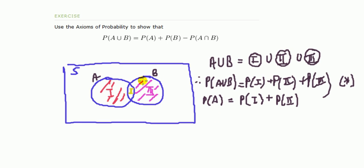Similarly, we can say for the set B, the set B is the union of 2 and 3, and since 2 and 3 are mutually exclusive, the probability of B will be the sum of the probabilities of those subsets.